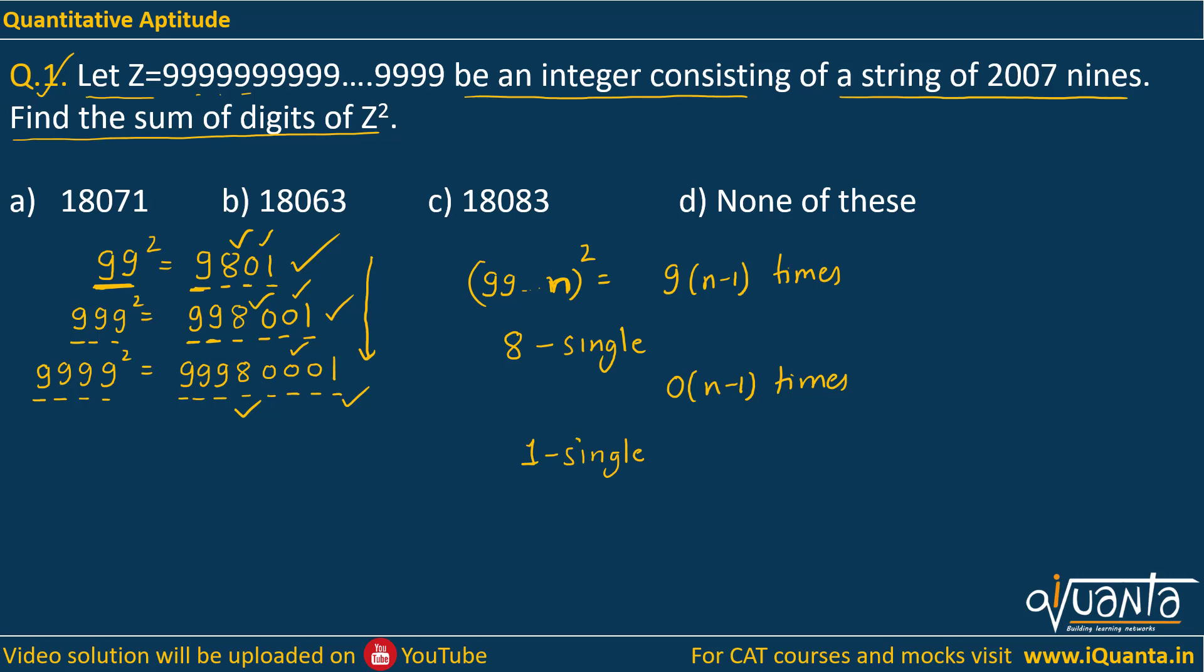So now we have been given a string of 2007 nines. So if we square it, we will be getting nine repeated how many times? 2006 times. Just after that we will be getting a single digit 8, then we will be getting 0 how many times? We will have 2006 zeros. Then the last digit will be 1. So this will be our number when we square a string of 2007 nines.